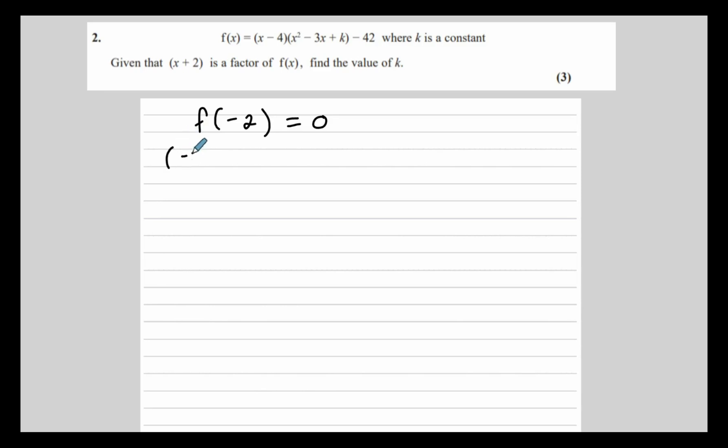So that will give us (-2 - 4)((-2)² - 3(-2) + k) - 42 = 0. Let's work out -2 - 4, that's -6. (-2)² is 4, -3 times -2 is 6, so 4 + 6 + k = 10 + k. That gives us -6(10 + k) - 42 = 0.